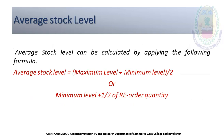The average stock level can be calculated from the maximum level and minimum level using the following formulas: Average Stock Level = (Minimum Level + Maximum Level) divided by 2, or alternatively, Average Stock Level = Minimum Level + one-half of the Reorder Quantity.